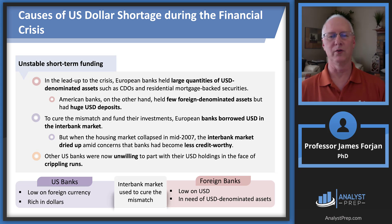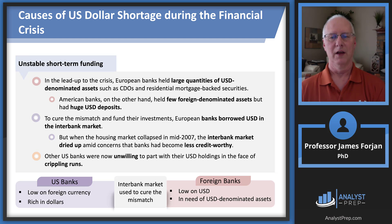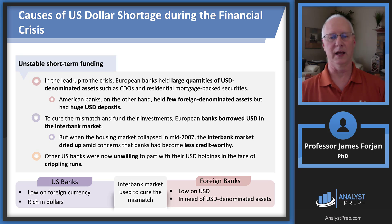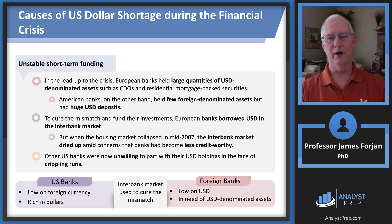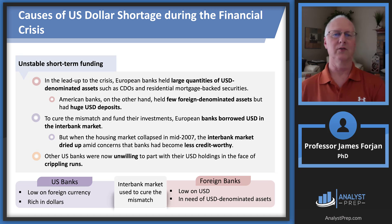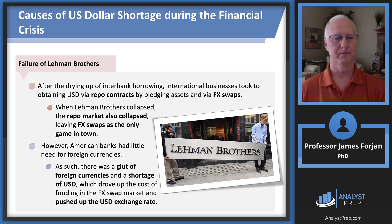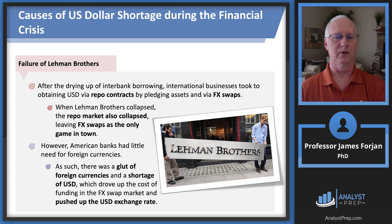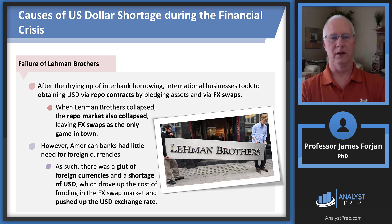To cure this mismatch, those European banks had to borrow US dollars in the interbank market. They were flooding interbank markets with their foreign currency in spot exchanges and withdrawing US dollars. So that's cause one: unstable short-term funding. Fast forward to 2007 — the failure of Lehman Brothers. We talked about Lehman Brothers and the repurchase market at length, so let me give you a quick example.